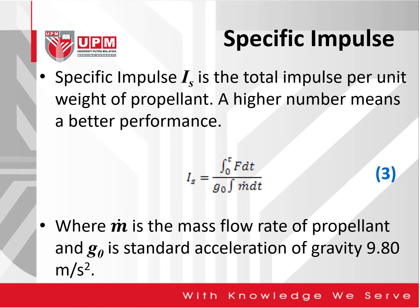The second item is specific impulse. The specific impulse, denoted by I subscript S, is the total impulse per unit weight of propellant. A higher value of specific impulse means better performance for the rocket.